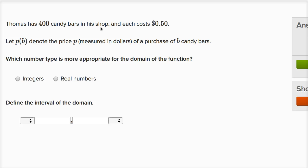Thomas has 400 candy bars in his shop, and each costs 50 cents. Let P of B denote the price P, measured in dollars, of a purchase of B candy bars.